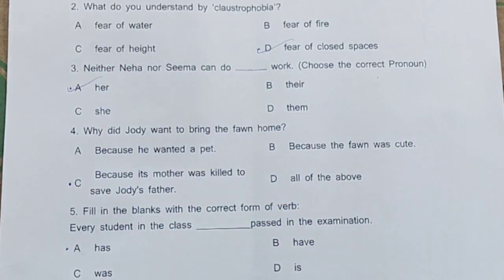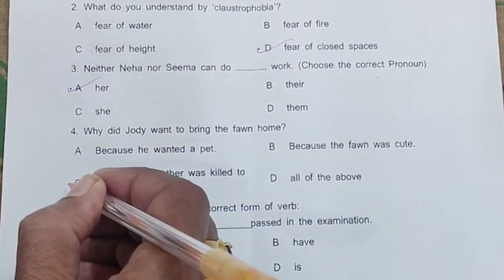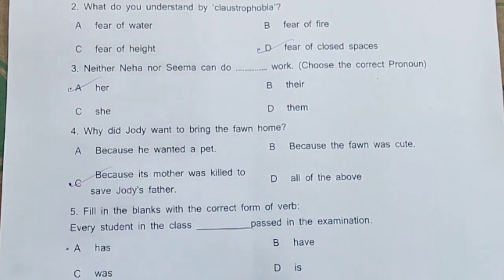Question 4: Why did Jody want to bring the fawn home? a) because he wanted a pet, b) because the fawn was cute, c) because its mother was killed to save Jody's father, d) all of the above. The correct answer is option C.